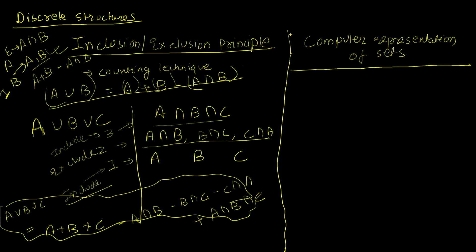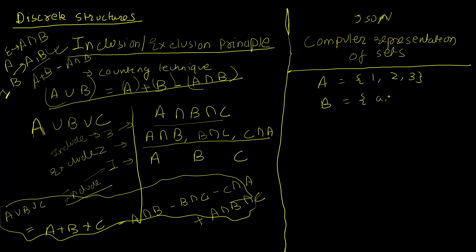Moving to our next topic: the computer representation of sets. This is somewhat abstract because it depends on how a computer architecture decides to represent things. If we want to represent a set A with elements {1, 2, 3}, we could store it as a hashmap or dictionary data structure where order doesn't matter. Similarly for set B with elements like {a, b, c}.